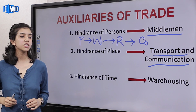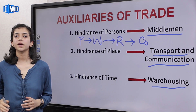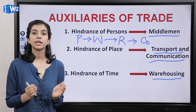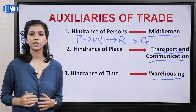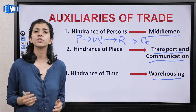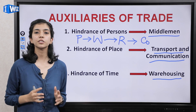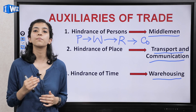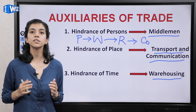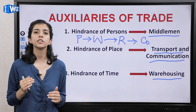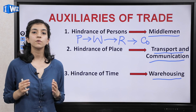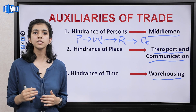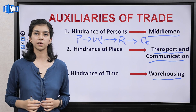Now comes hindrance of time, and this is solved by warehousing. There is usually a time gap between when a particular commodity is produced and when it is consumed. For example, sugar is generally produced from sugarcane between the months of November to March broadly. But sugar demand is round the year — 365 days. So what do we do? When the large amount of sugar is produced, it is stored in some good, facilitated place where that sugar will not get destroyed — wo perish nahi hogi ya kharab nahi hogi. Un places ko kaha jata hai warehouses. Extra produced sugar is stored there, and when the demand arises, sugar is transported from there. That's how warehousing works and helps.